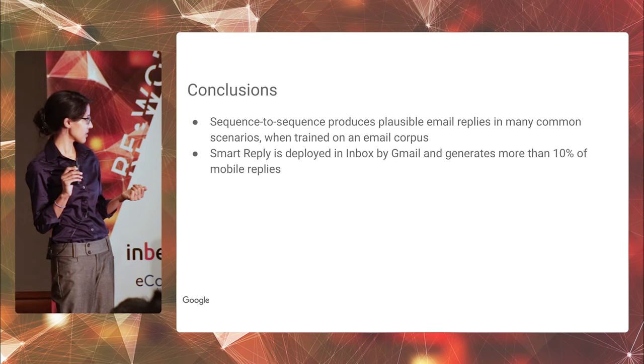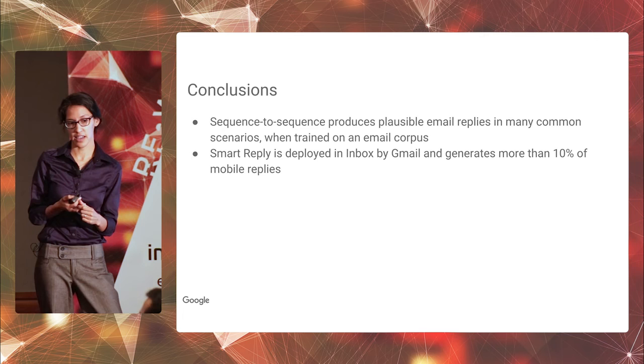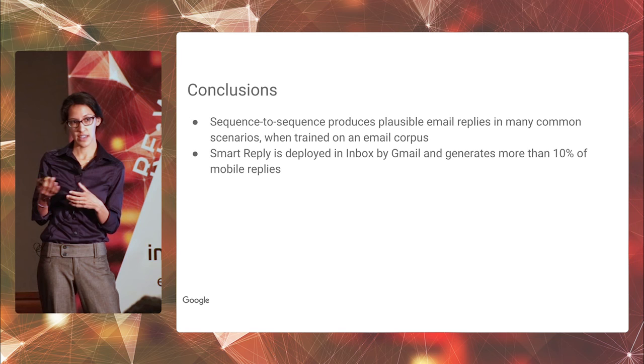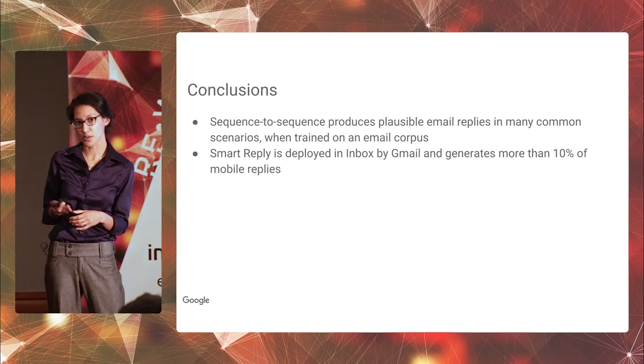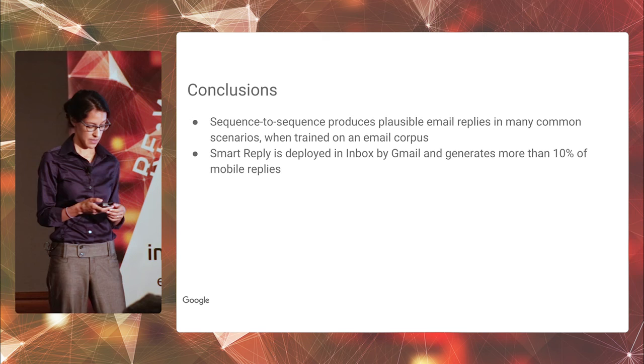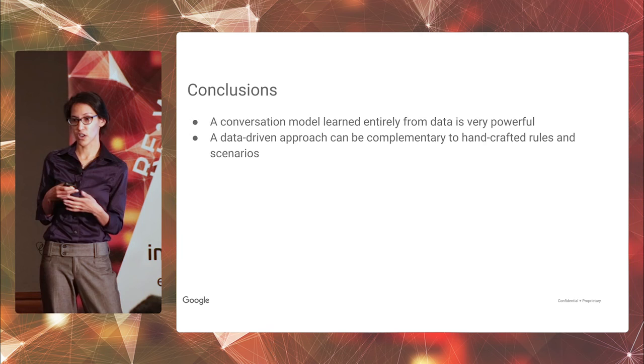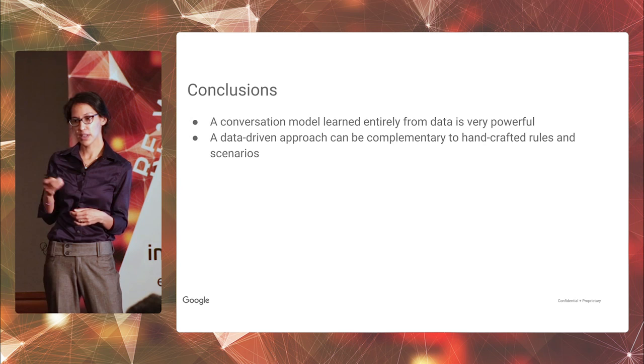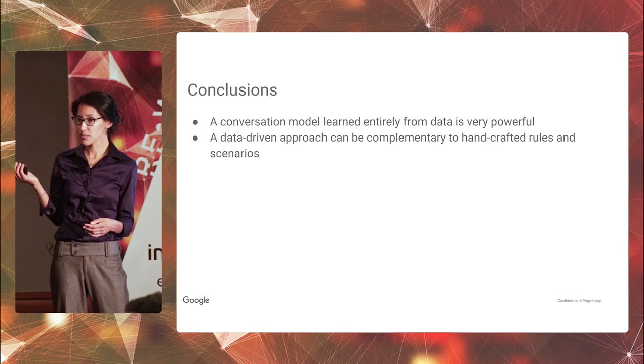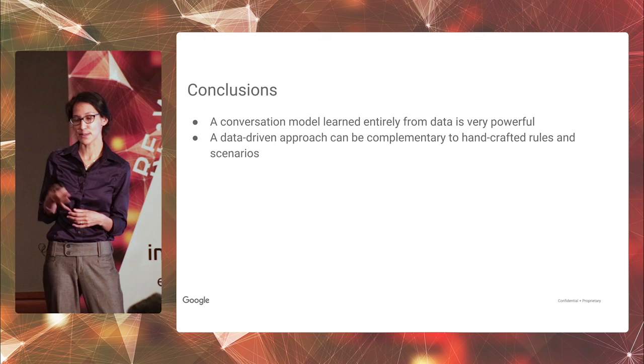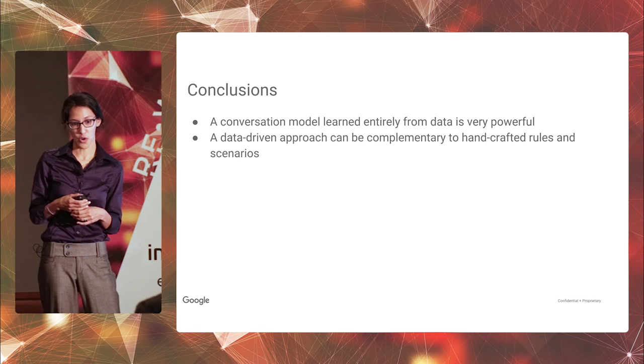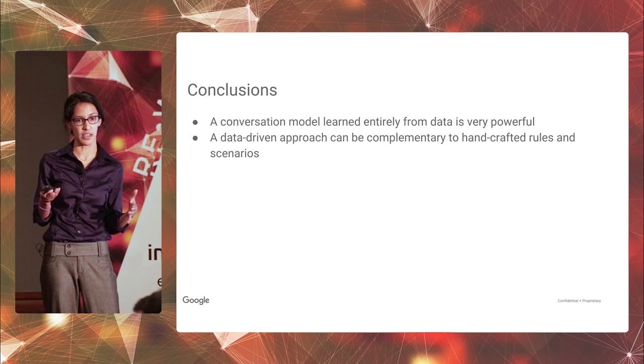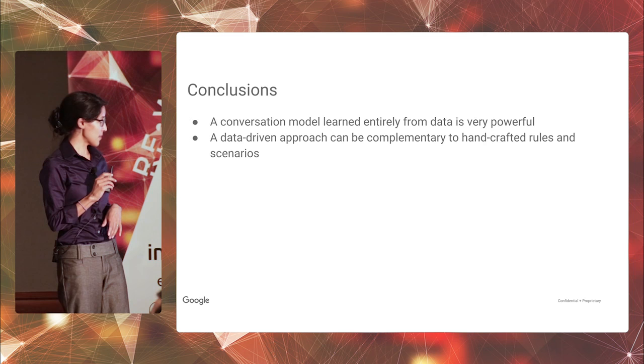So to wrap up, I just wanted to reiterate again that this type of model, this sequence-to-sequence model, in this case, we've shown that it can generate plausible email replies in many scenarios. It learns end-to-end from data. And it is launched and it is being used. But more importantly, I wanted to step back from Smart Reply and just talk more generally about language understanding. I think that this very data-driven approach is very promising for language understanding. After we launched Smart Reply, some time later, Google also started to use a very similar model for Google Translate, which is also a language understanding problem. And so I think this type of model in general has shown that it's very powerful for language understanding. Specifically for virtual assistants, we could find this kind of approach to be complementary to some of the handcrafted scenarios and rules. These approaches might work well together.